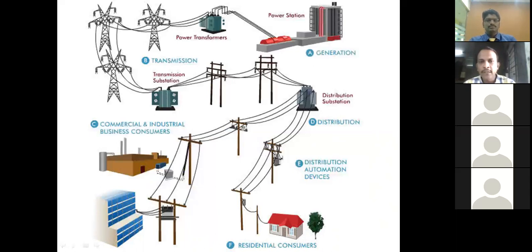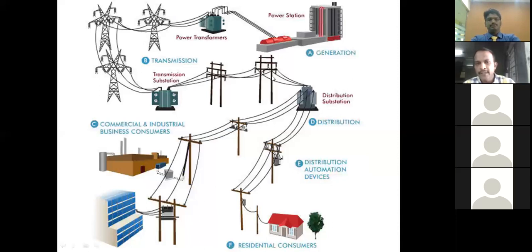At the transmission substation the voltage is stepped down. From there it serves industries at high voltage levels. Then it moves to the distribution stage, where step-down transformers supply various industries, malls, commercial, agricultural, industrial, and domestic loads. Finally, it reaches residential consumers.